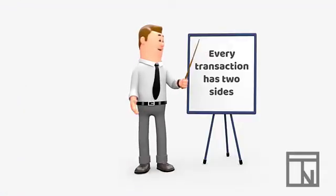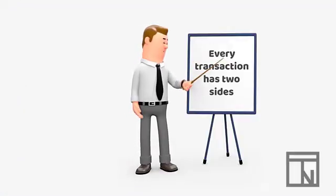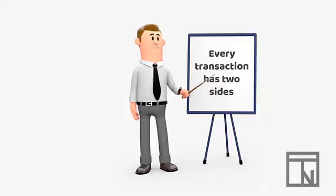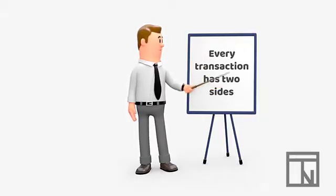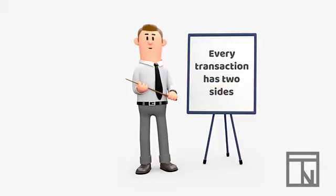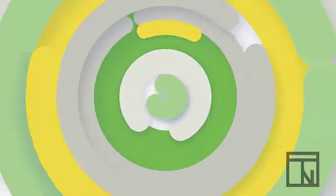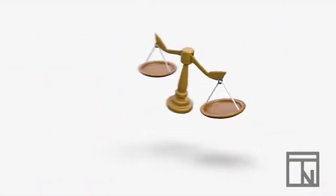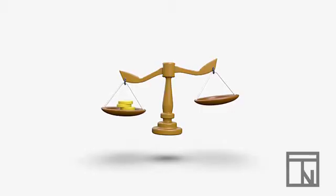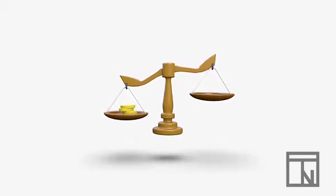In our previous videos, we learned that every accounting transaction has two sides. These two sides affect part of the accounting equation and make it increase or decrease. These increases and decreases from both sides of the transaction help keep the accounting equation in balance.